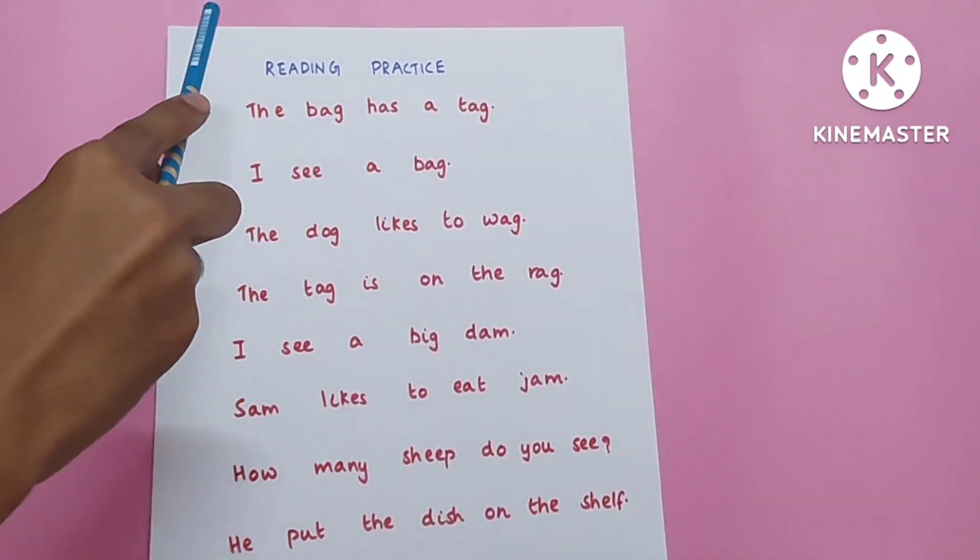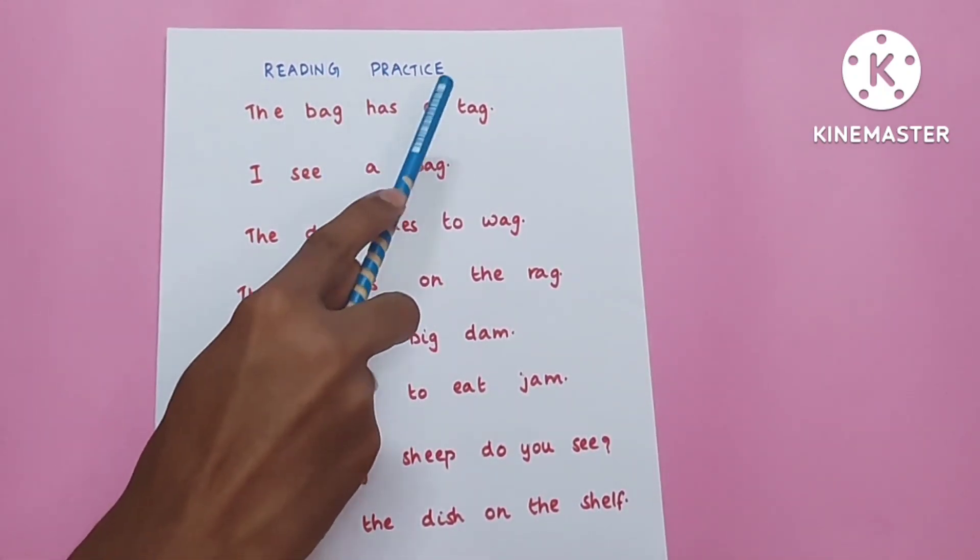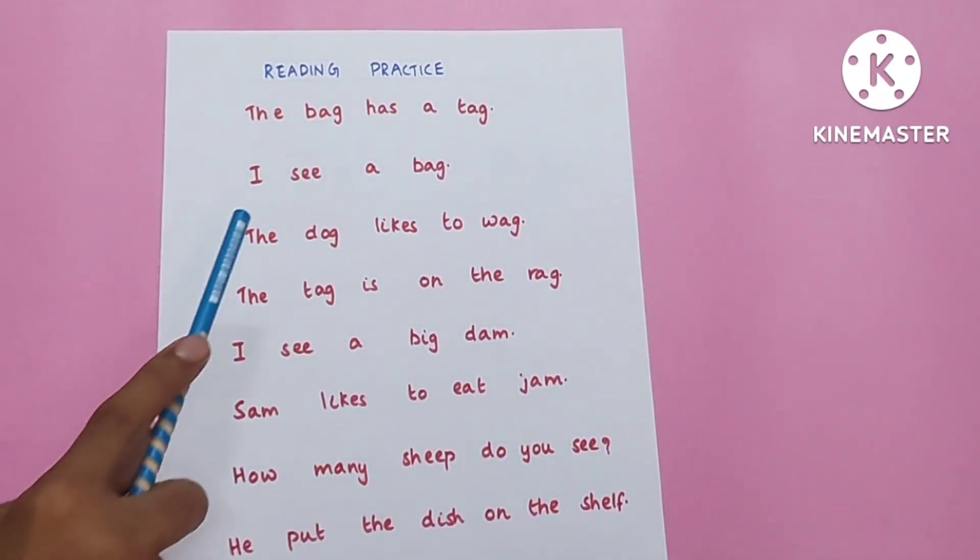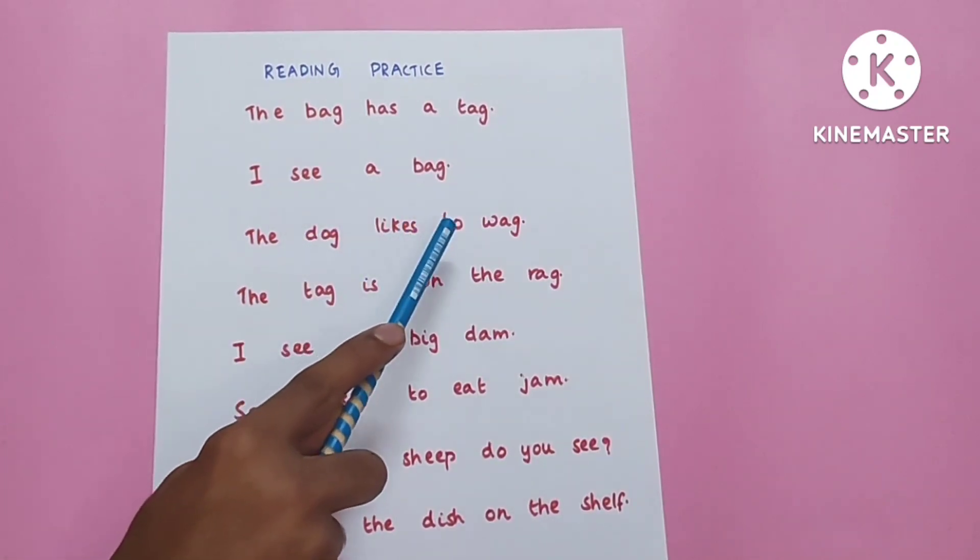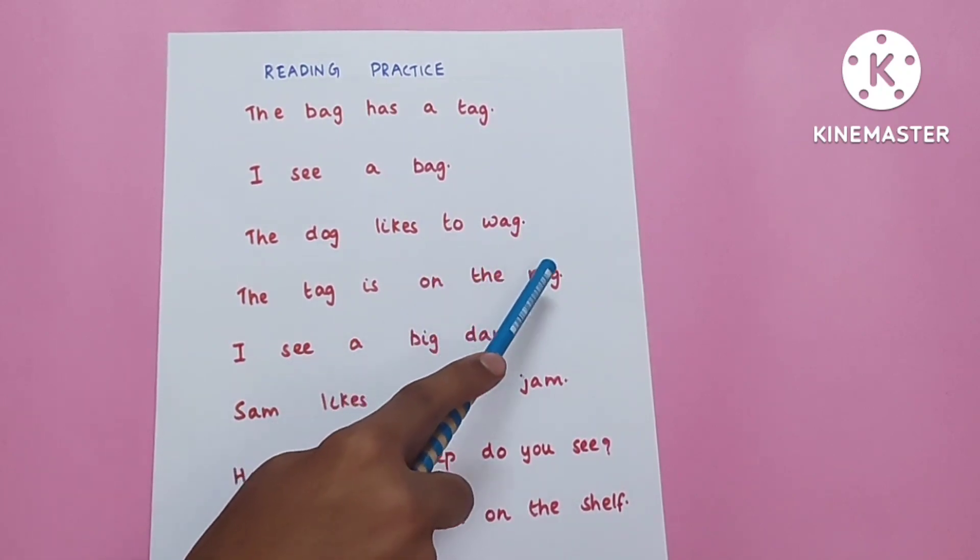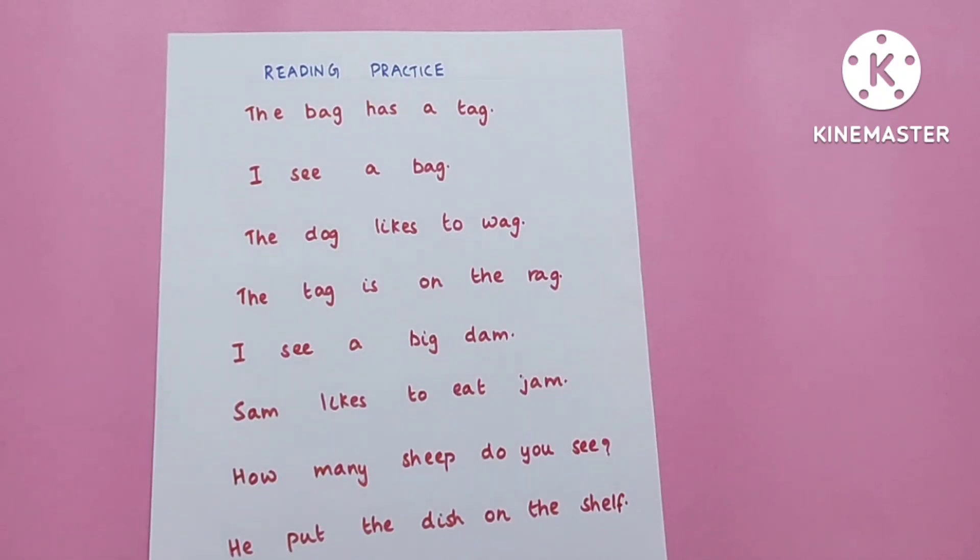Reading practice. The child has to read the following sentences: The bag has a tag. I see a bag. The dog likes to wag. The tag is on the track. I see a big dam. Sam likes to eat jam. How many sheep do you see? Put the dish on the shelf.